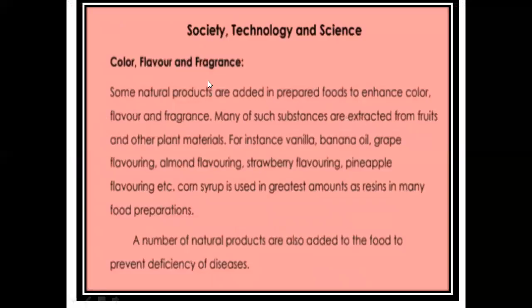Society, technology, and science — color, flavor, and fragrance: some natural products are added to prepared foods to enhance color, flavor, and fragrance. Many such substances are extracted from fruits and other plant materials — for instance, vanilla, banana oil, grape flavoring, almond flavoring, strawberry flavoring, and pineapple flavoring. Corn syrup is used in the greatest amount as a sweetener in many food preparations. These food extracts can be used as flavoring, fragrancing, or coloring agents.